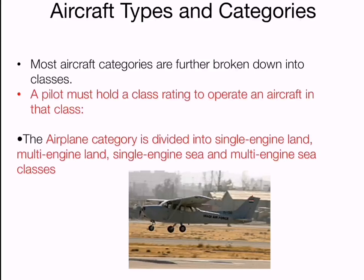The airplane category is divided into single engine land and multi-engine land, and also single engine sea and multi-engine sea classes. The term single engine means it has one engine, and land means it only operates on land. So single engine land is a single engine aircraft that operates on land.